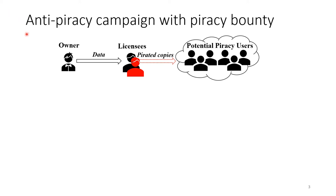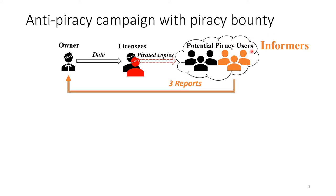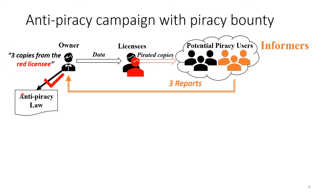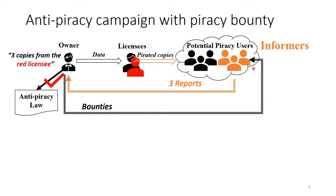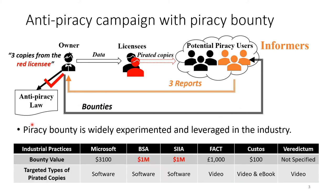To help the owner, an anti-piracy campaign with piracy bounty is introduced. With bounties, piracy users may become informers. For example, there are three informers sending three reports to the owner indicating that the red licensee is the infringer. With this fact, the owner can further refer to law enforcement while sending bounties to the informers. In fact, piracy bounty is widely experimented and leveraged in the industry. For example, the Business Software Alliance launched a program which rewards $1 million to informers.